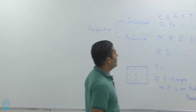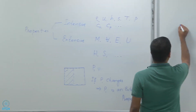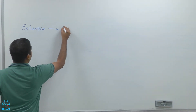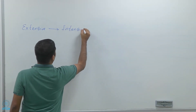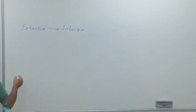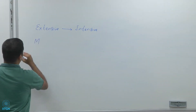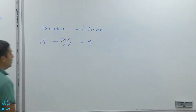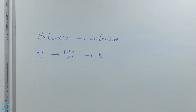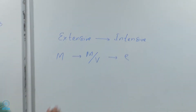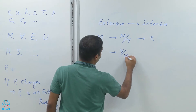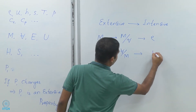Extensive properties can be mapped one-to-one to corresponding intensive properties. For example, if I take mass and divide it by volume, it becomes the density rho — and I go from an extensive to an intensive variable. Similarly, I can divide volume by mass and get specific volume.